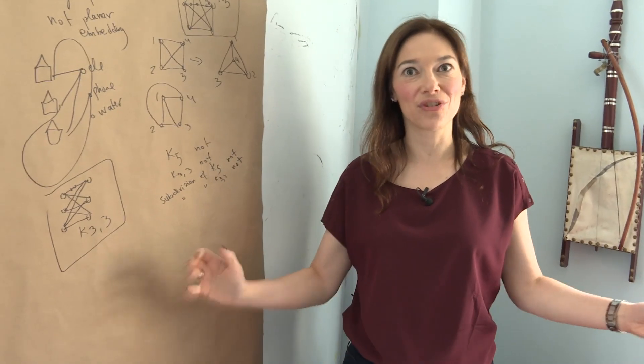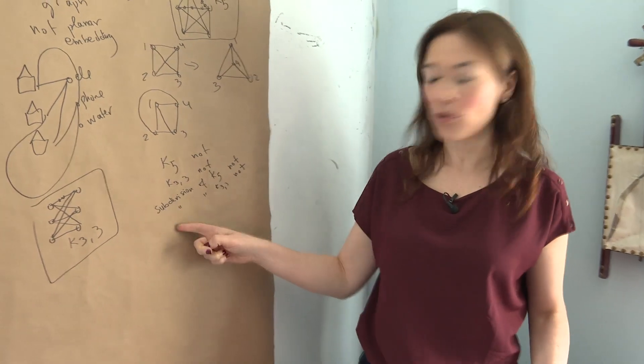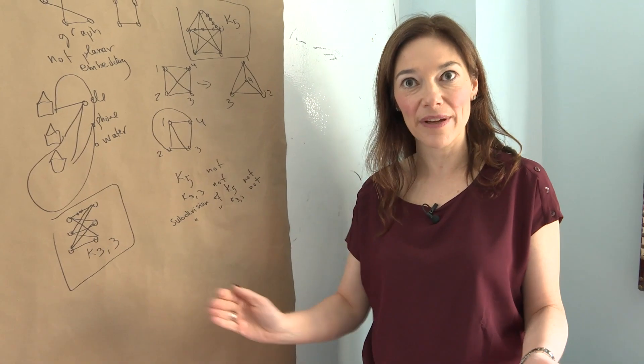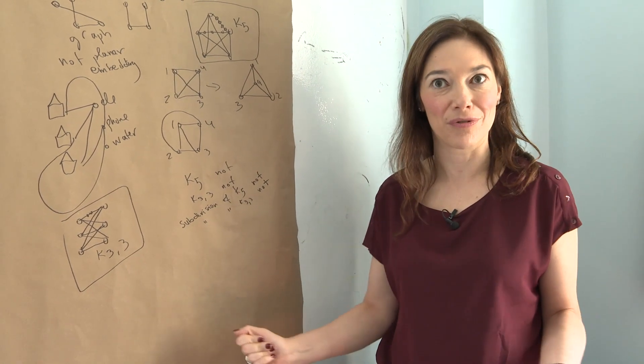You can delete vertices and edges from it and find either subdivision of K33 or subdivision of K5. It's called Kuratowski's theorem.